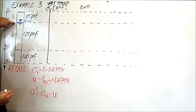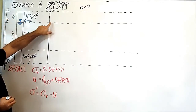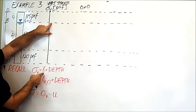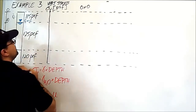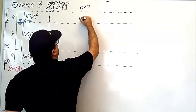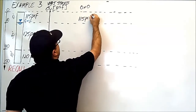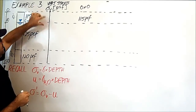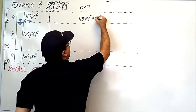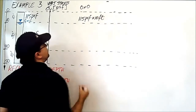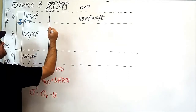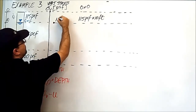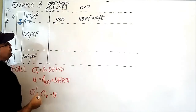Let's move down to the next interface. What is going to be the vertical stress right here? The density of the soil above is 115 pounds per cubic feet, and the depth of the soil above is 10 feet. That means the vertical stress here is 1,150 pounds per square feet.